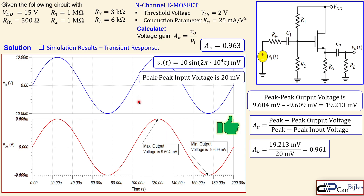This concludes our source follower example using the N-channel enhancement type MOSFET. We covered the DC analysis, the AC analysis, and verified both in SPICE simulations. If you have any questions or comments about this example, please let me know. In previous videos you can also see the DC analysis for this MOSFET type and for BJT circuits. See you next time.